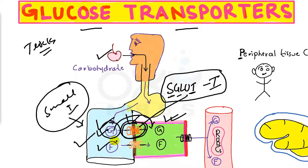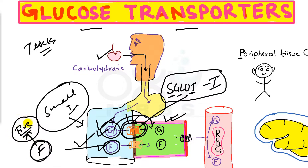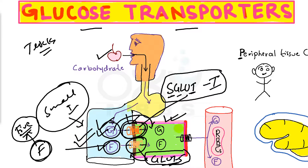For fructose transport, from the F in fructose we can easily derive number 5. So for the transport of fructose there must be GLUT5 — glucose transporter number 5 — which is responsible for fructose transport from the lumen of the small intestine into the enterocyte.